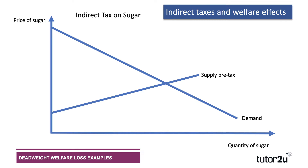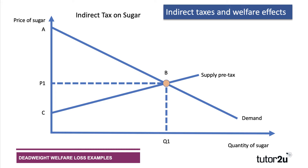Let's take the example of a government introducing a new tax on manufacturers of sugar. The supply curve pre-tax is shown, as is the demand curve, and initially the market for raw sugar is in equilibrium at price P1 and Q1. Let's put some letters on the diagram — always helpful to use letters in exams rather than shaded areas, it's much neater and more accurate. So initially, consumer surplus is the area A B P1: the area underneath the demand curve and above the price.